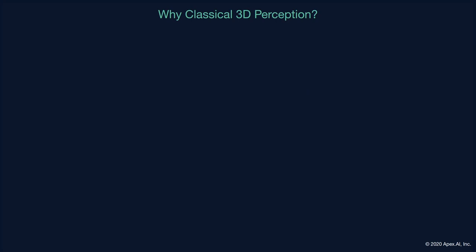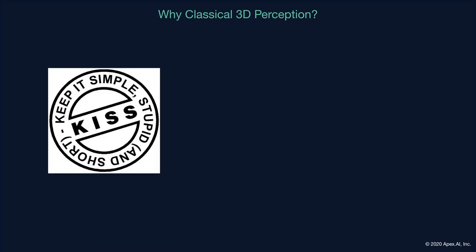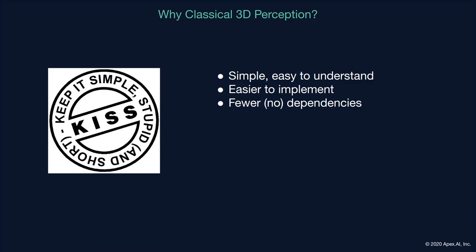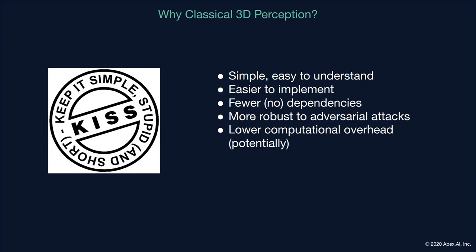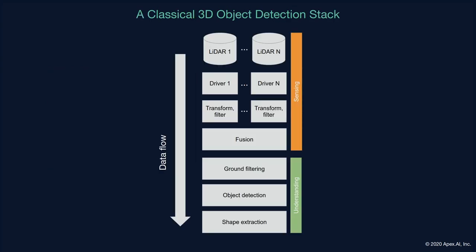So the main takeaway is that Autoware Auto uses a classical object detection stack. The simplest and most direct answer for why is that a classical stack is simpler — it's easier to understand, easier to implement, and easier to control the implementation. A corollary is that it has fewer or no dependencies, and it's more robust to adversarial attacks because it's well understood. A hardware corollary is that it has lower computational overhead, meaning it doesn't require accelerated compute hardware. This makes it more broadly applicable. A classical object detection stack provides a solid foundation, which then permits more exotic solutions to be built on top.